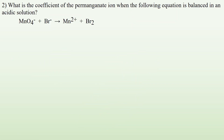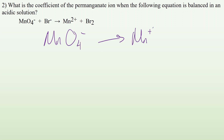Number two: what is the coefficient of the permanganate ion when the following equation is balanced in an acidic solution? The first step is to split the redox reaction into half-reactions. I have MnO₄⁻ → Mn²⁺. Balance any elements that aren't oxygen or hydrogen — here all we have is Mn, and it's balanced: one on the left, one on the right.